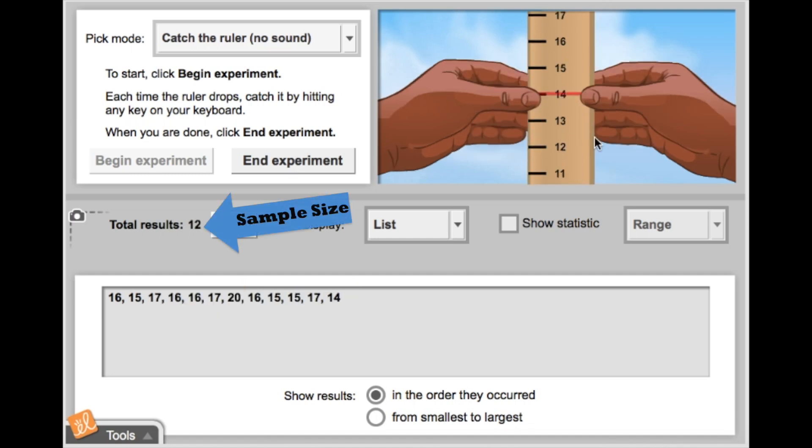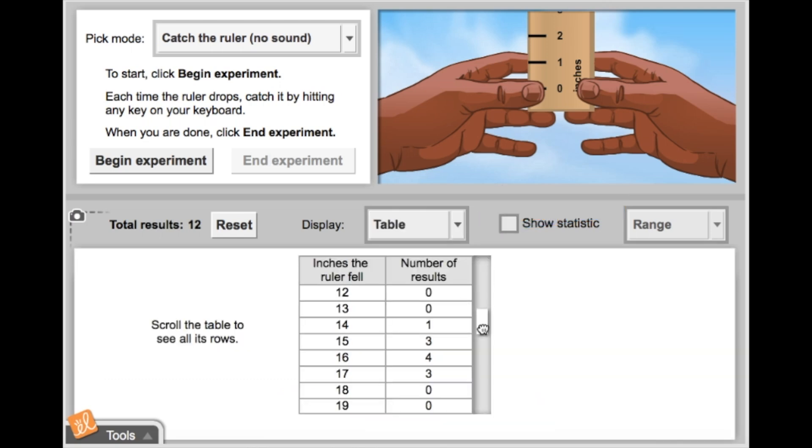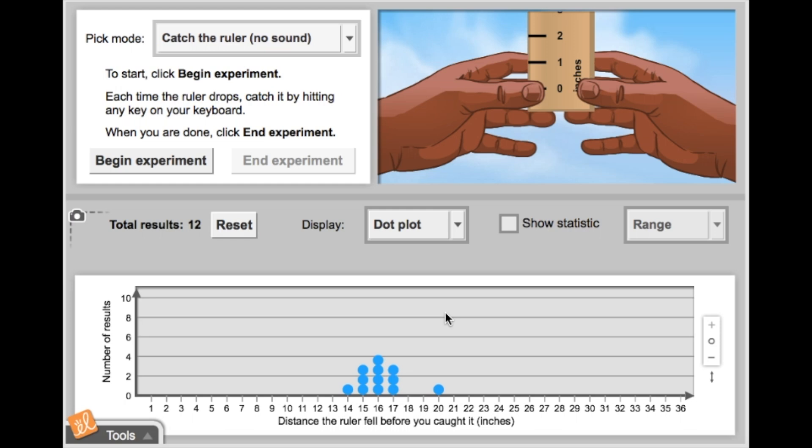Once I have a nice sample size, I'll click End Experiment. Now I can analyze my reaction time by looking at it in a variety of displays: list, table, dot plot, and bar graph.